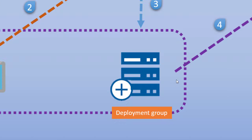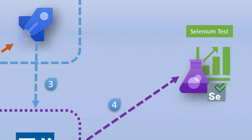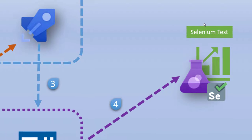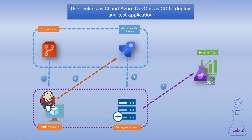Once the application has been deployed, it executes the tests specified within the build and generates a report, like we saw in our earlier video. This is a very common scenario where Jenkins acts as the continuous integration system and the Azure release pipeline acts as continuous delivery. This is the whole architecture and lab we'll be discussing throughout this section.